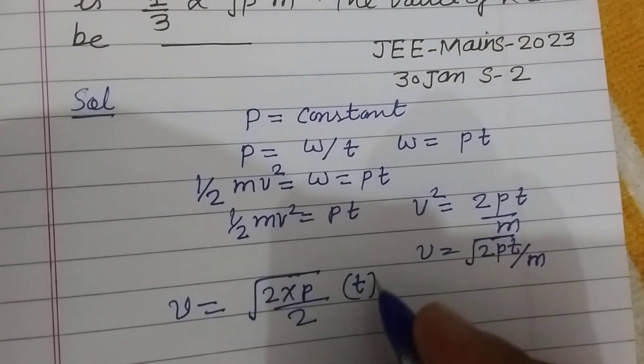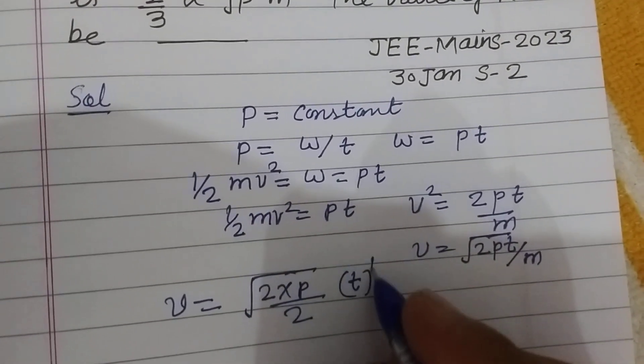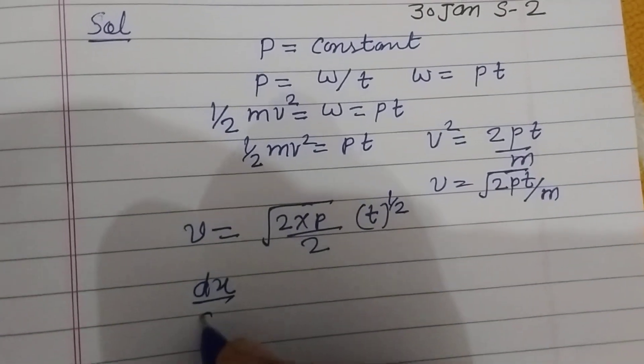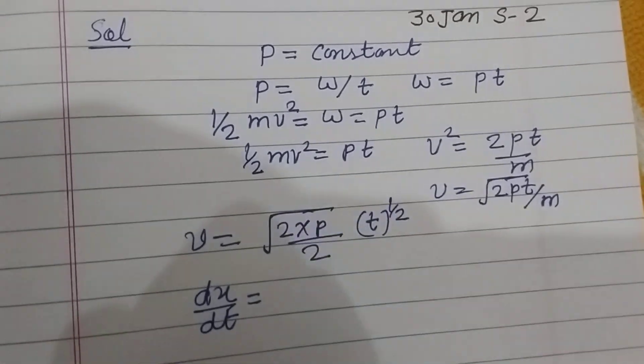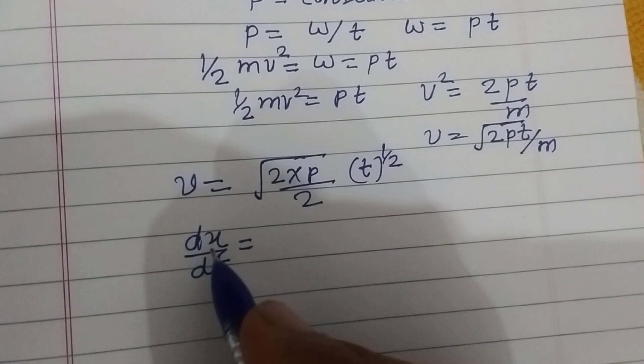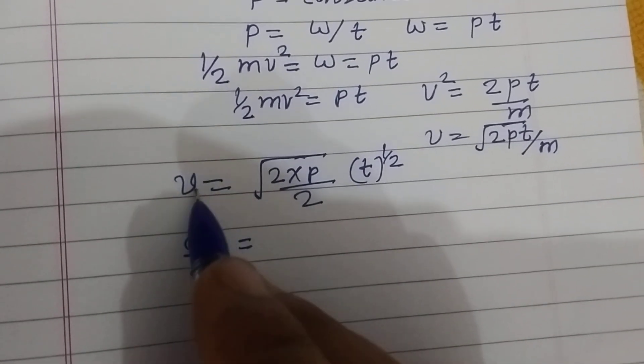And we write T as T to the power 1/2. Now dx over dt, which is velocity, the differentiation of displacement is velocity.